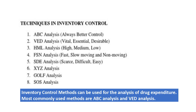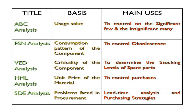The techniques in inventory control include 8 methods, of which ABC analysis and VED analysis are used mostly for analysis of drug expenditure, and a combination of ABC and VED is also used. In ABC analysis, the consumption value is the basis. In FSN analysis, the consumption pattern or movement is considered. In VED analysis, the criticality of the drug — vital, essential, or desirable — is considered. The unit price is considered in HML analysis, and problems faced in procurement are considered in SDE analysis.